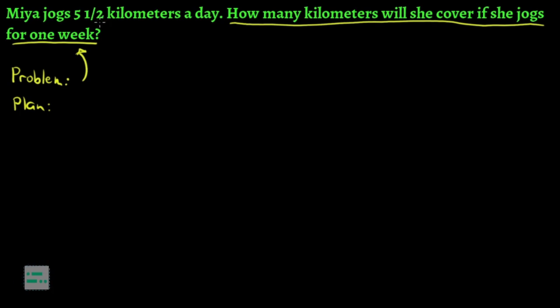ibig sabihin nun, we can either add 5 and a half by itself, or to itself, 7 times, or we can simply multiply.